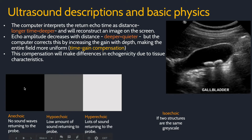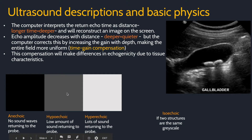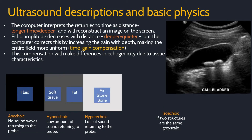For ultrasound, black is anechoic, meaning no sound waves are returning to the probe at this level, and all sound is passing through. The grayscale from there is in relative terms. If it is relatively dark, it is described as hypoechoic, and hyperechoic if it is relatively bright. If two structures are the same echogenicity, they are isoechoic. To simplify it: fluid is anechoic, soft tissue like muscle and liver are hypoechoic, fat is more hyperechoic, and air, stones, and bones are very hyperechoic.